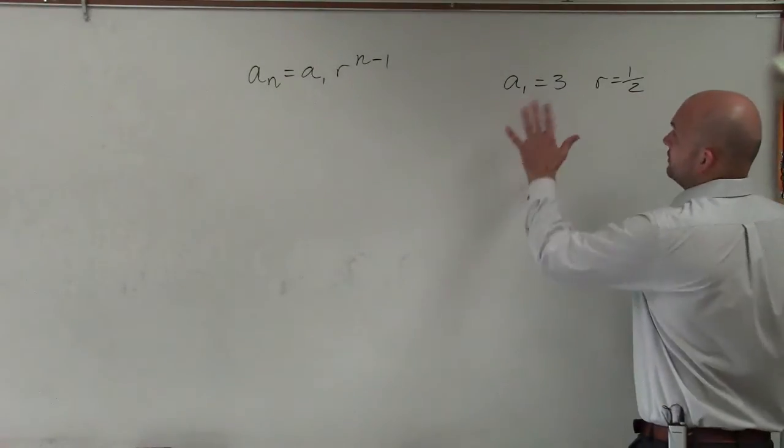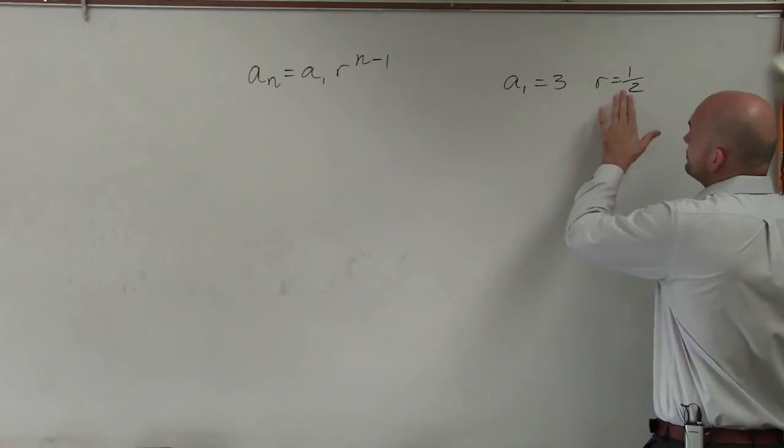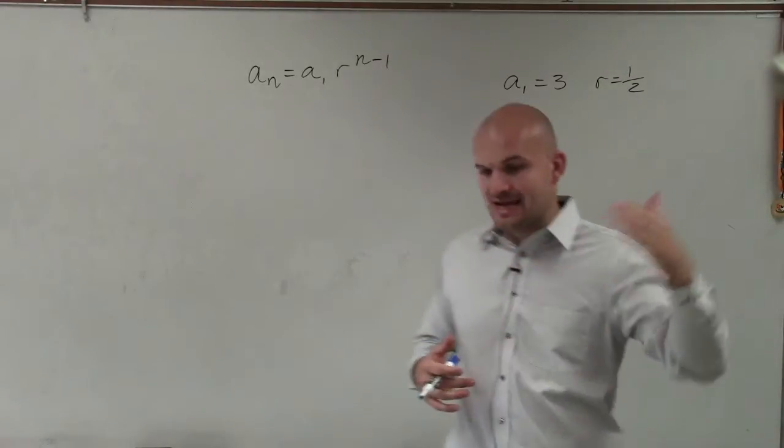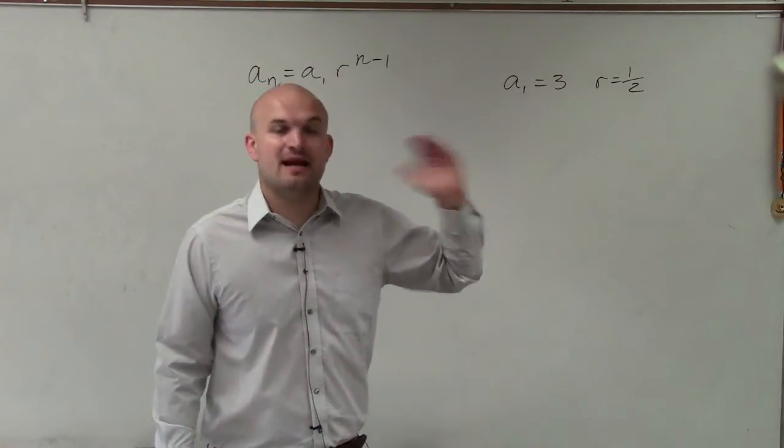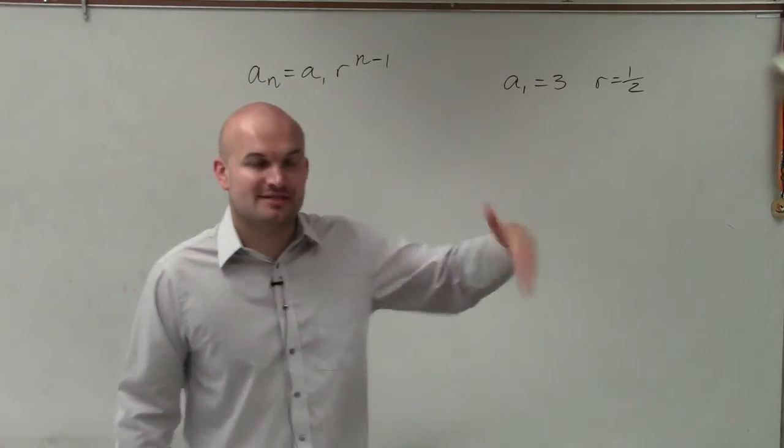And in this geometric sequence, we know that the first term is 3 and the ratio is 1 half. That means to get to the next term, I'm going to have to multiply by 1 half. So 3 times 1 half would be 3 halves. And then I multiply by 1 half again to get to the next term.